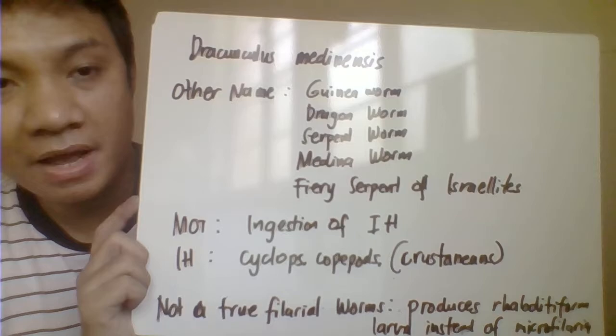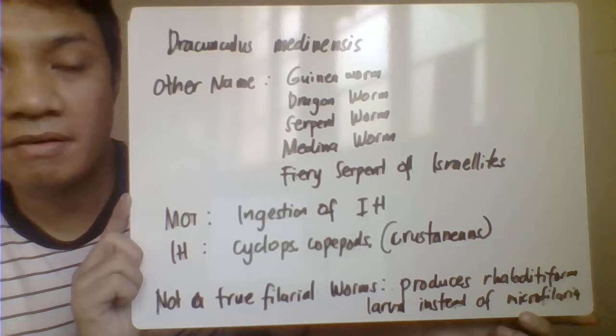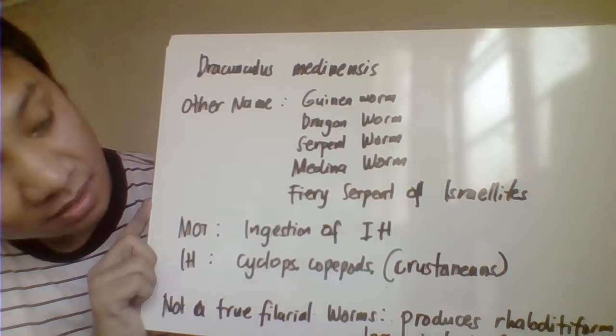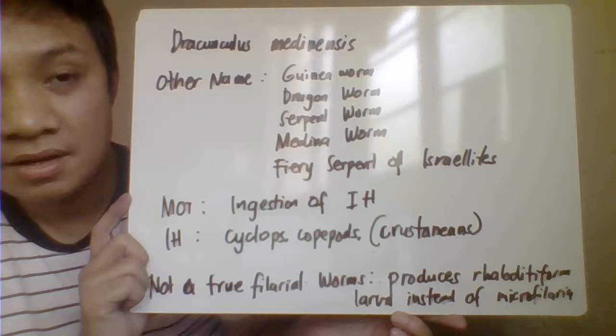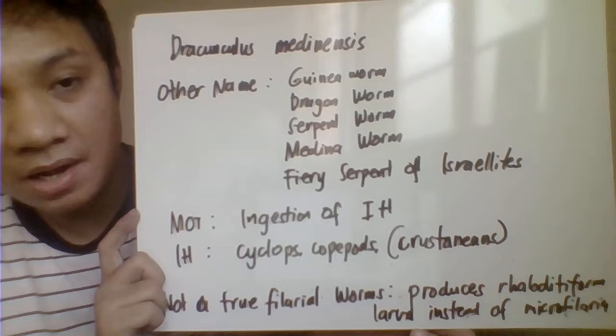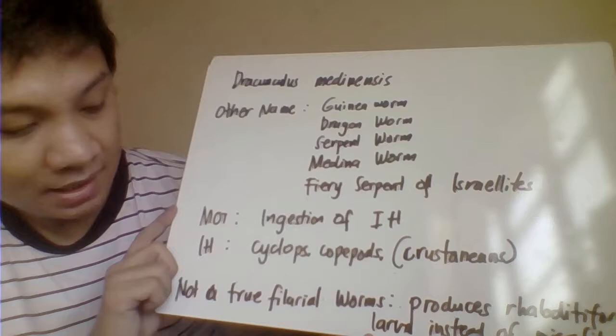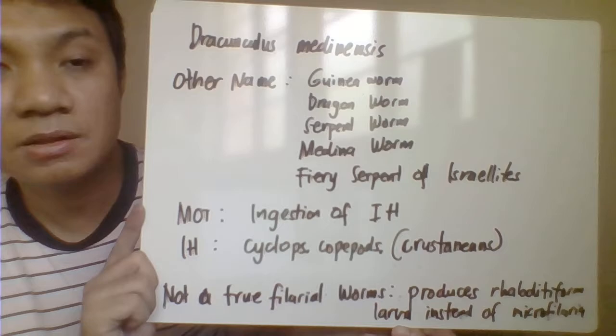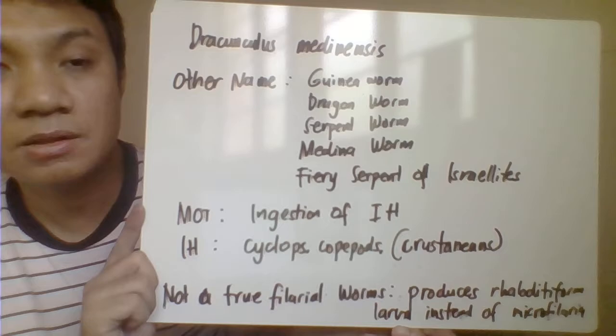The last parasite is Dracunculus medinensis. Other names include guinea worm, dragon worm, serpent worm, Medina worm, and the fiery serpent of the Israelites — very common in Israel. The mode of transmission is by ingestion of the intermediate host, which is Cyclops or Copepods — small crustaceans. We consider this one not a true filarial worm because it does not produce microfilaria, but rather produces rhabditiform larvae. The infective stage to the host is the rhabditiform larvae.